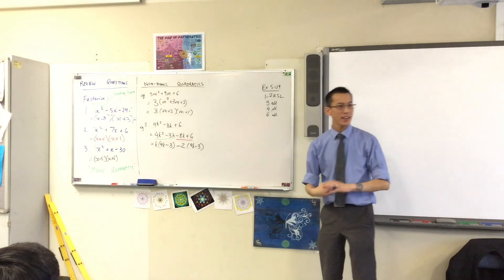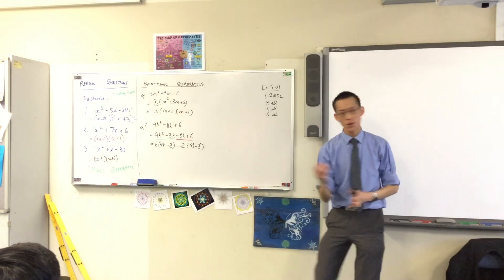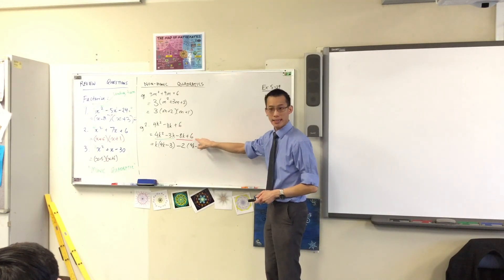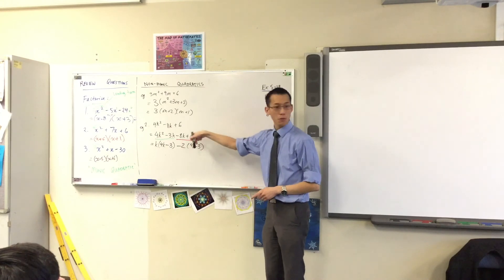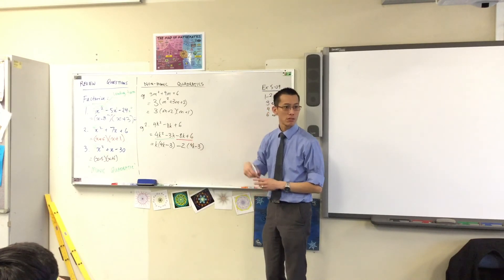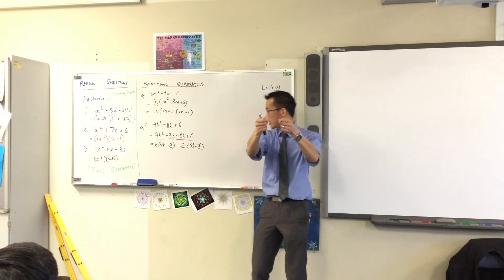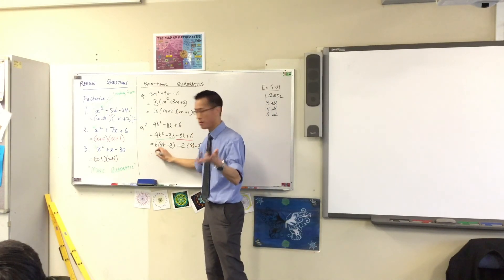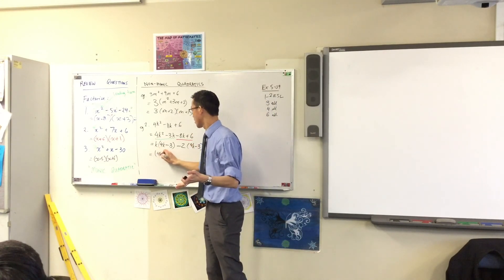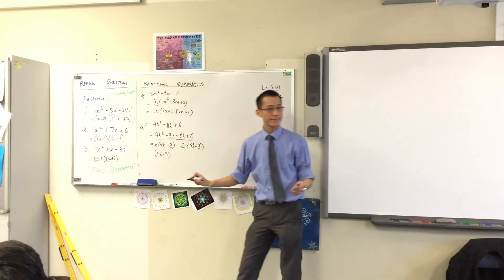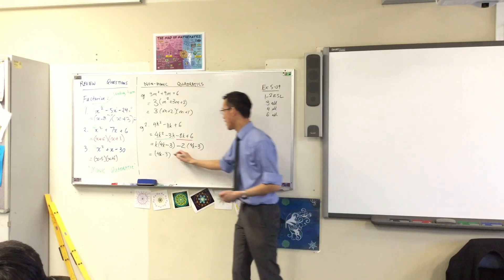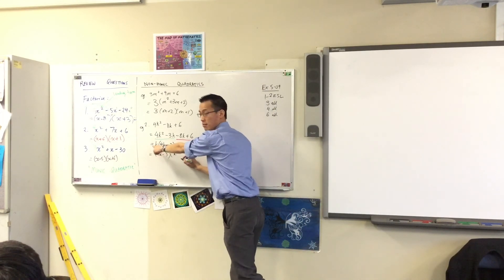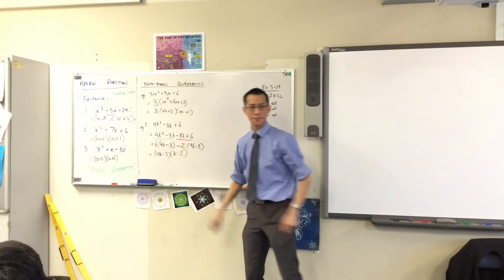You can see I've transformed the problem into one I can solve. I can do one more thing here — I'm going to take out the common factor of 4k minus 3, and that leaves me with k here, minus 2 there.